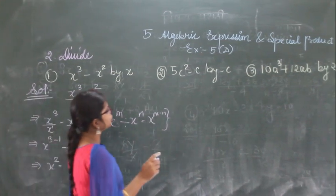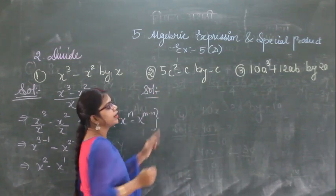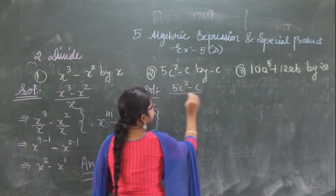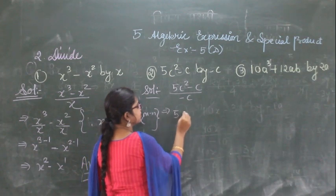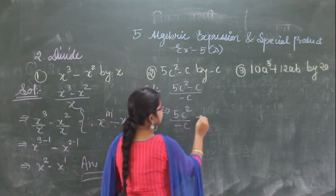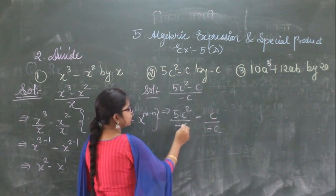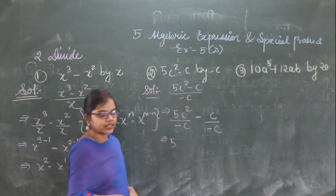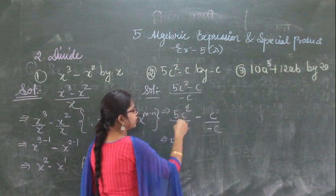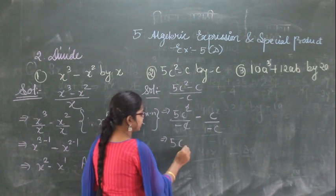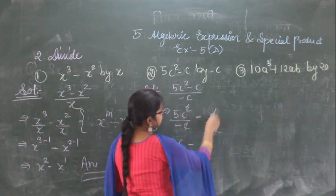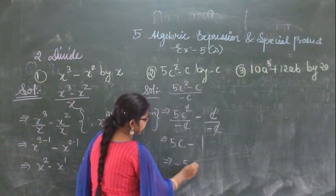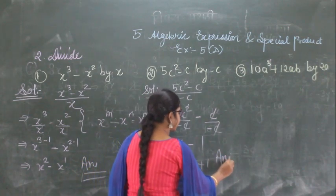For the next question: 5x cubed minus x divided by minus x. Split as 5x cubed divided by minus x, minus x divided by minus x. For the first term, the x terms cancel leaving minus 5x squared. For the second term, x divided by minus x gives minus 1, and the negatives cancel to give plus 1. So the answer is minus 5x squared plus 1.